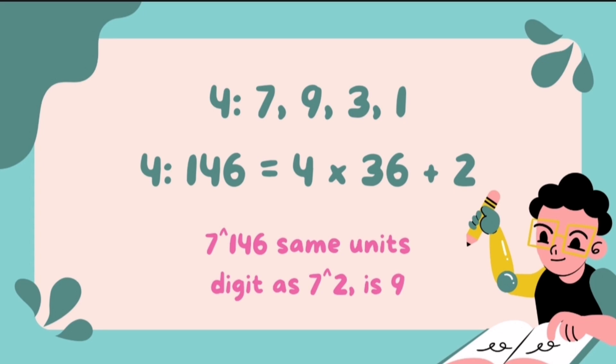Since 146 is not a multiple of 4, we need to find the remainder when 146 is divided by 4: 146 equals 4 times 36 plus 2. This means that 7 raised to 146 has the same unit's digit as 7 raised to 2, which is 9.